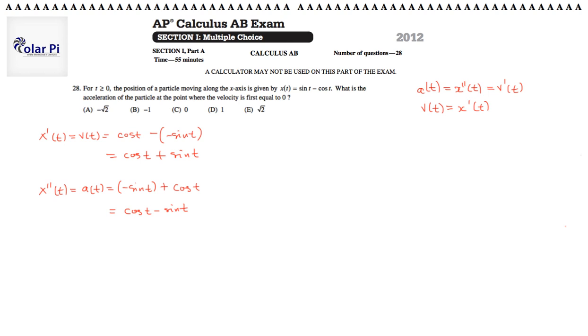Now, we've got our acceleration function, right here, this is a of t, and we've got our velocity function here. So once we figure out where velocity is equal to zero for the first time, we're on the home stretch. So to figure out where velocity is equal to zero for the first time, we should try to figure out where it's equal to zero, period.